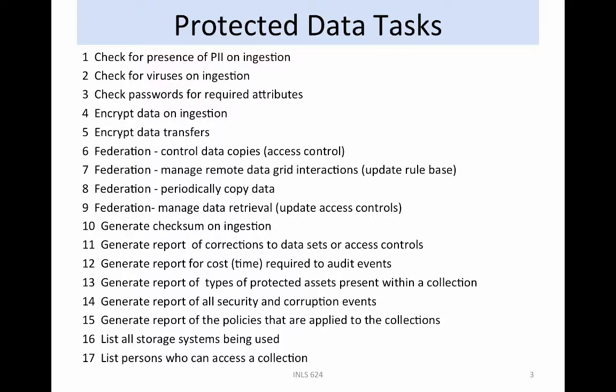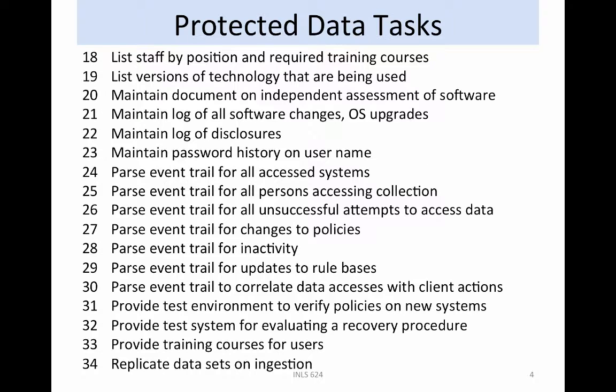Multiple types of reports are needed, from lists of failed access attempts, to lists of the storage systems that were used, and lists of the persons who could access the protected data. The second set of protected data tasks focuses on documentation of all changes made to the environment, the parsing of event trails to log all successful and unsuccessful accesses, and the provision of test environments to validate new technology before use in production.